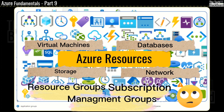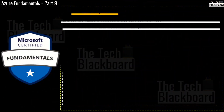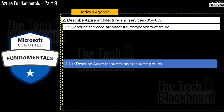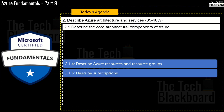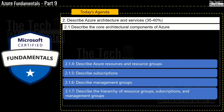Well, all this and much more coming up in this video. Hello and welcome back to the Tech Blackboard. In today's episode and the connected next episode, we are going to learn how to describe Azure resources and resource groups. This is our section 2.1.4, and then in section 2.1.5 we will understand how to describe subscriptions. Moving ahead, we have described management groups in section 2.1.6, and then finally we will cover section 2.1.7 which is to describe the hierarchy of resource groups, subscriptions, and management groups.